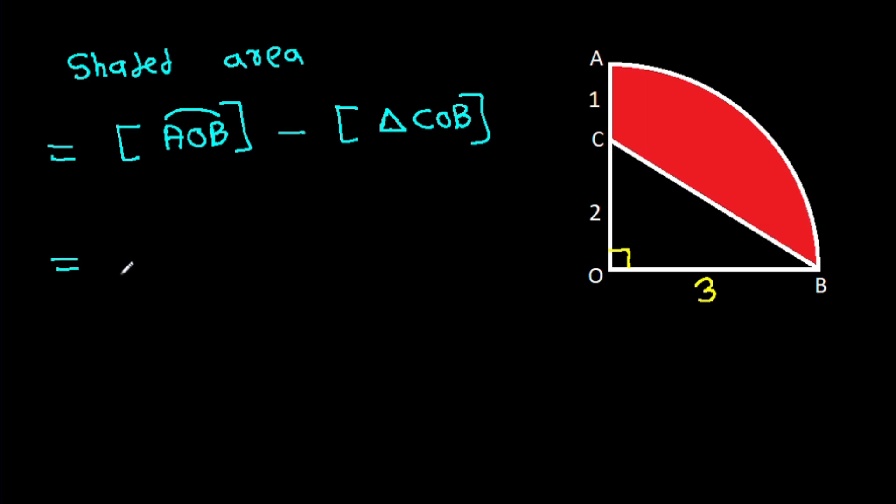It is pi times radius OB squared over four, minus area of COB.